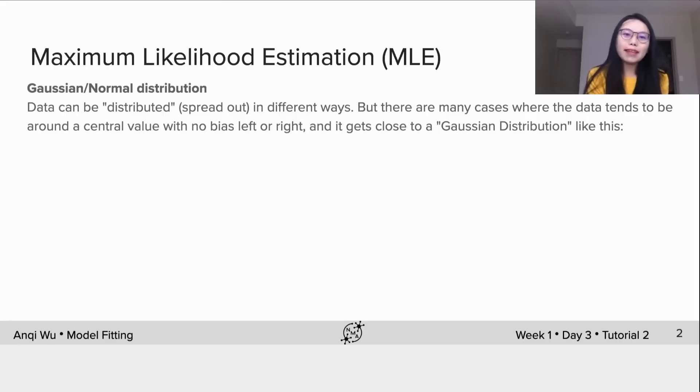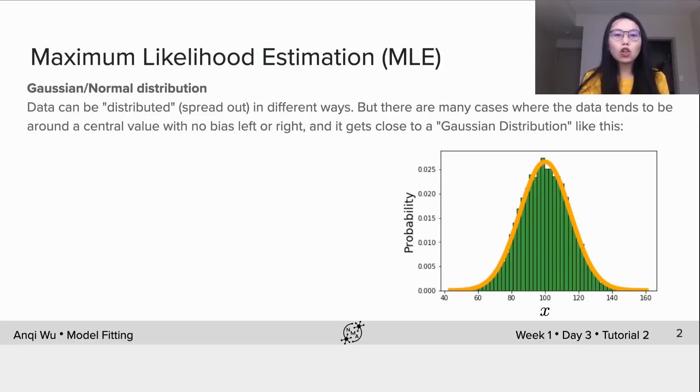Before diving into maximum likelihood estimation, I'd like to introduce Gaussian distribution, or normal distribution. Data can be distributed in different ways, but there are many cases where the data tends to be around a central value with no bias left or right. It gets close to a Gaussian distribution like this.